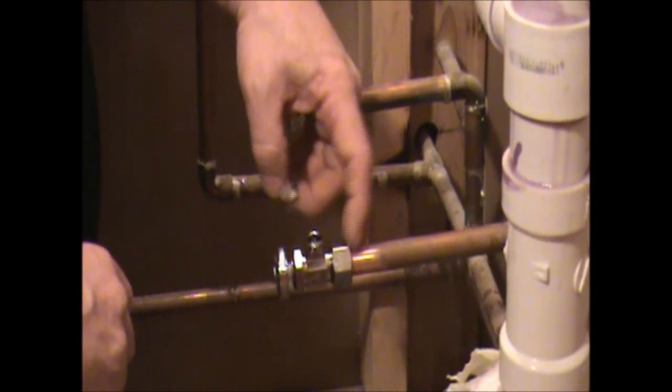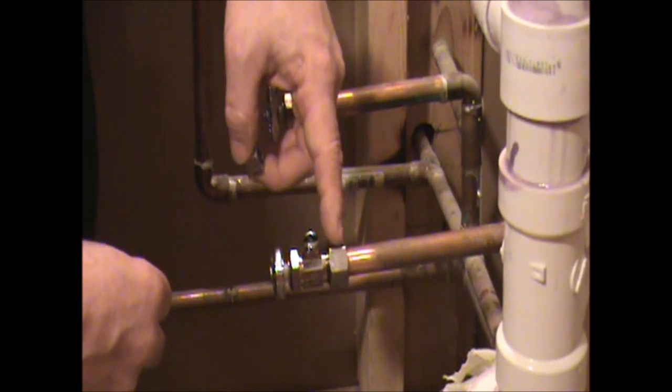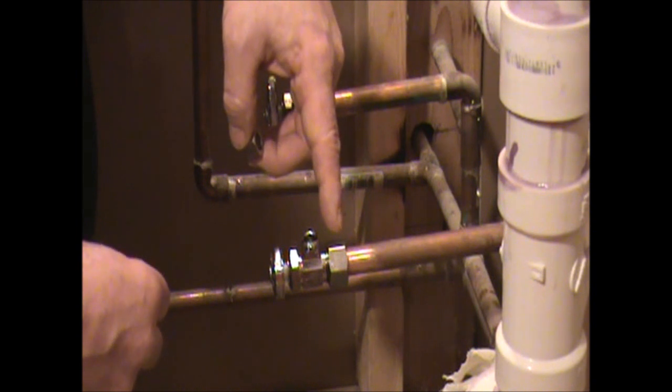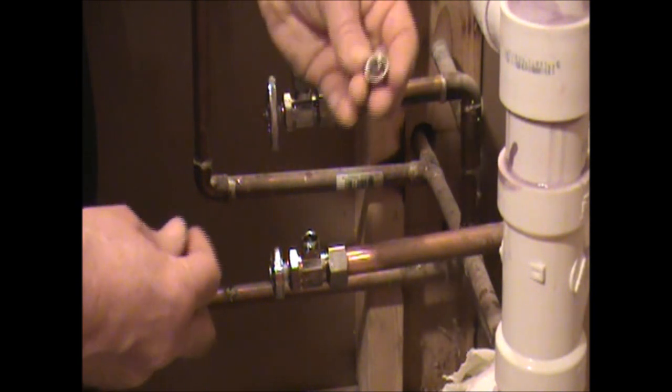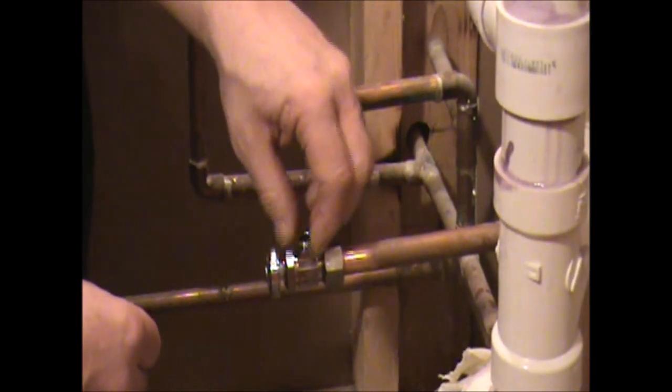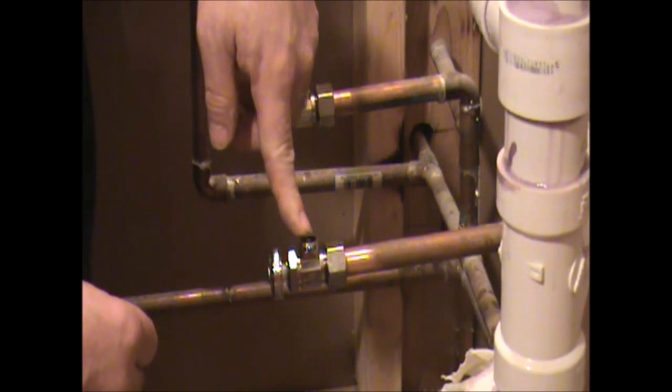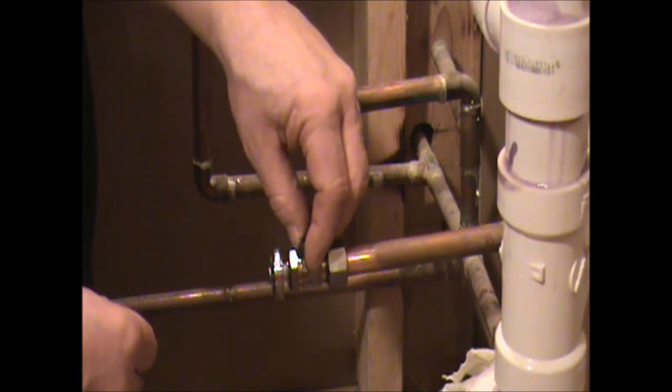The other type is the flexible lines that have a female end on the supply line. And for that, you're going to remove the nut, the bushing, and you're just going to discard that, and you're going to screw that fitting right on your shutoff valve. These are also called stops. So you're going to screw it right onto your stop.